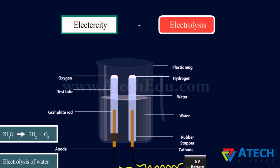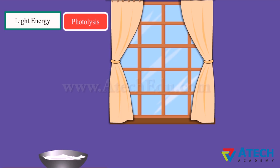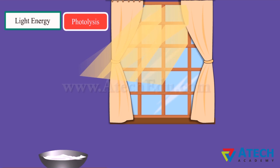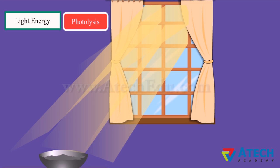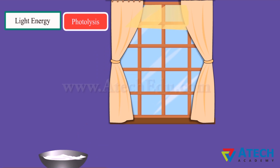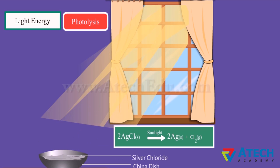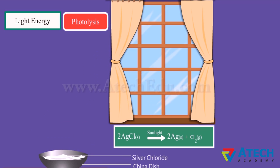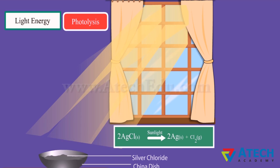Decomposition of a substance due to the action of light energy is called photolysis. For example, when white silver chloride is kept under the sun, it turns grey. This is due to the decomposition of silver chloride into silver and chloride by light.